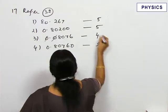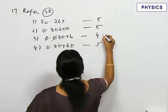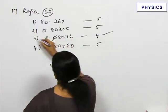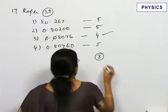So, which number has the least significant figures? This one — the third number. So the answer is option 3.